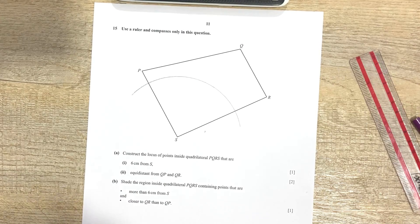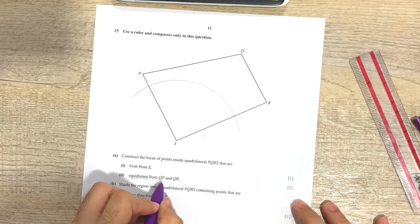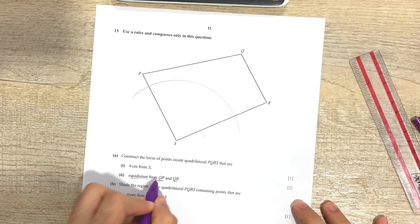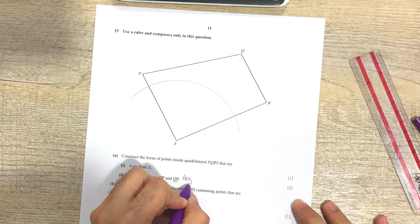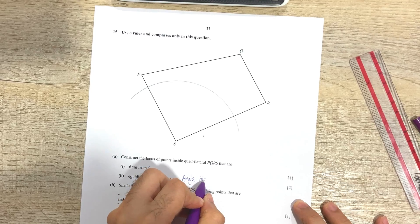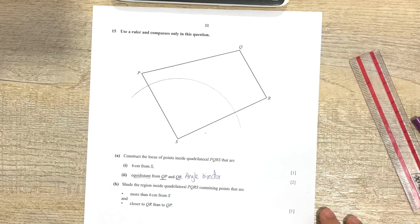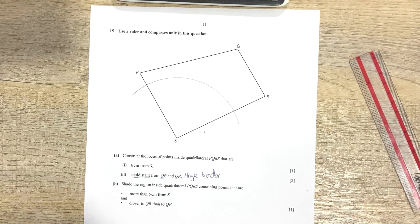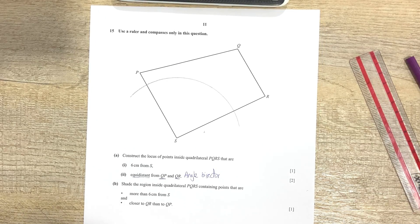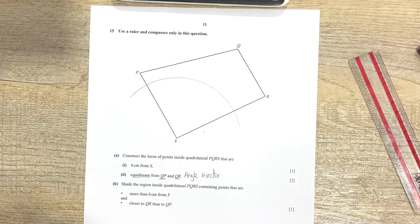Equidistant from QP and QR. So whenever it says equidistant from two fixed lines, what we draw over here is something called angle bisector. Okay, and if you want to know how to draw an angle bisector, I have a video to that which I'll leave a link to in the description.